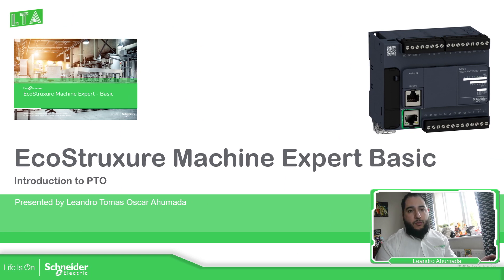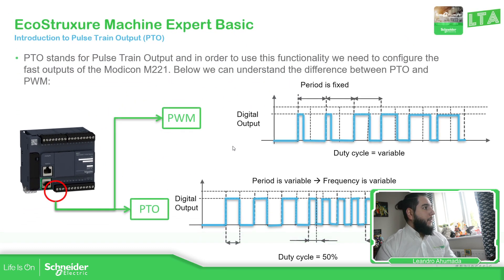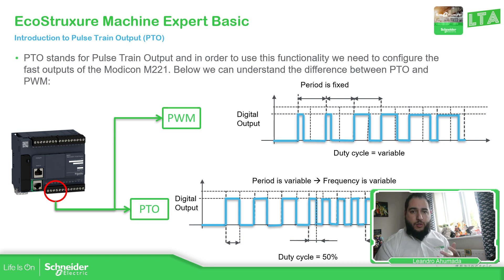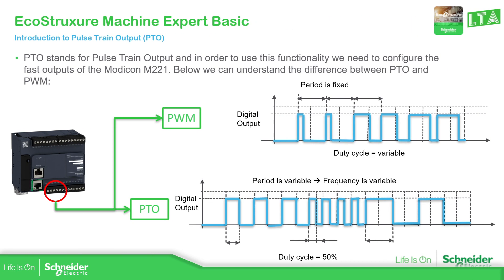The first thing we need to know is: what is PTO? PTO stands for Pulse Train Output. When I was trying to find a way to explain this, I saw that there was some confusion between PWM and PTO, so I tried to make this graph in order to explain it better. Let's go to the full view.